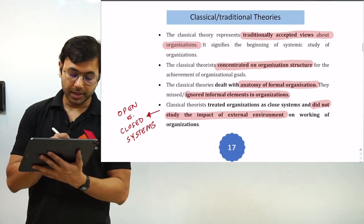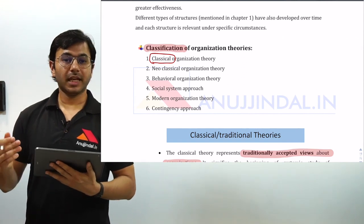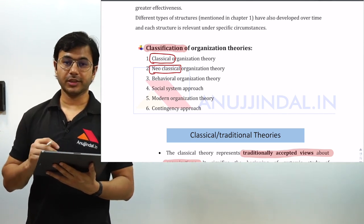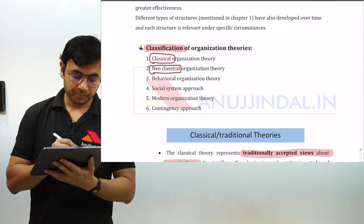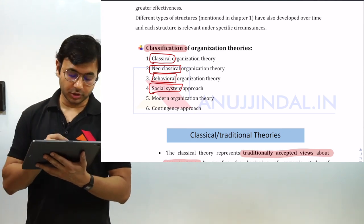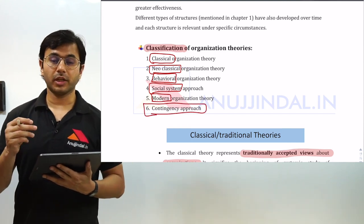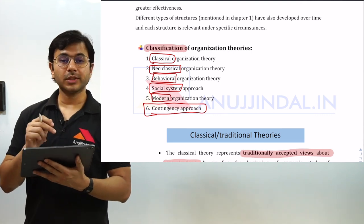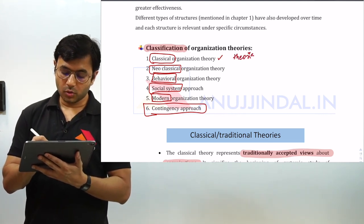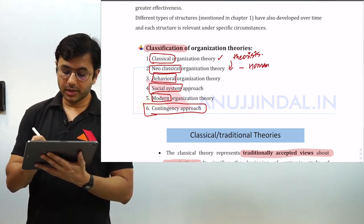The first set of theorists, known as classical organization theorists, came in the era of the first industrial revolution and after that. Then we had certain improvements which led to the evolution of neoclassical organization theories. After which we had behavioral theorists, then social systems approach, then modern organization theories, and finally what we follow now is called contingency theory. We shall be covering all these one by one, starting with classical organization theories and then neoclassical, also called human relationists.